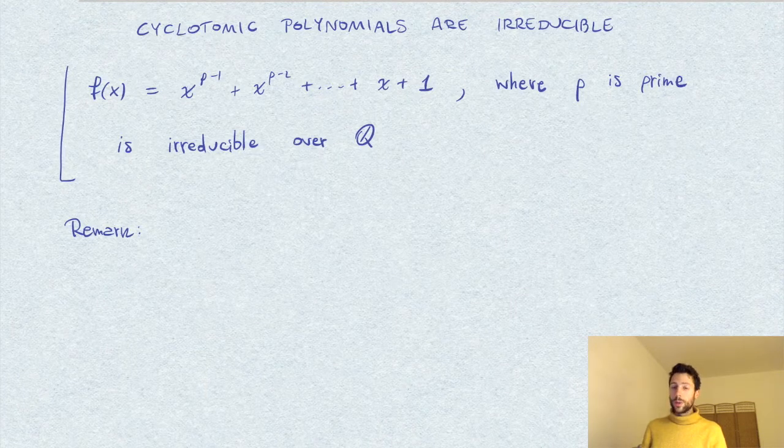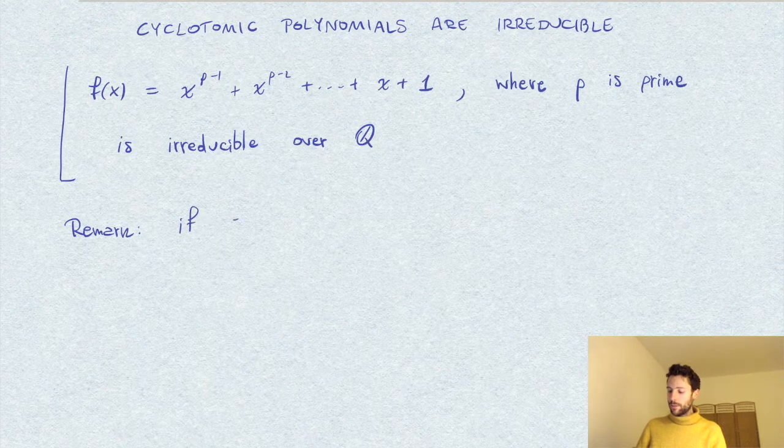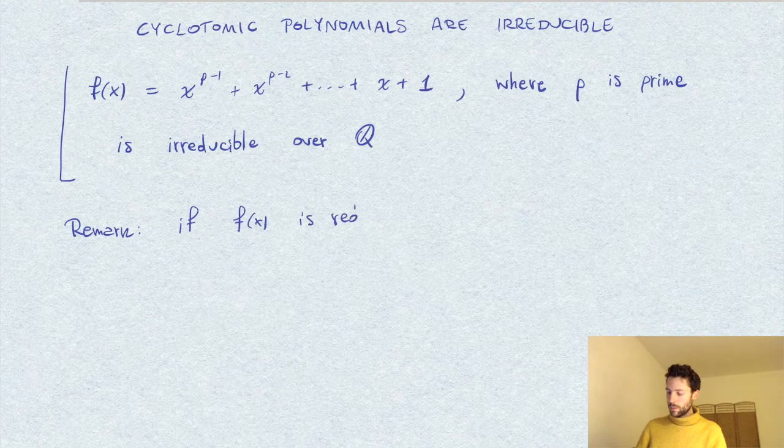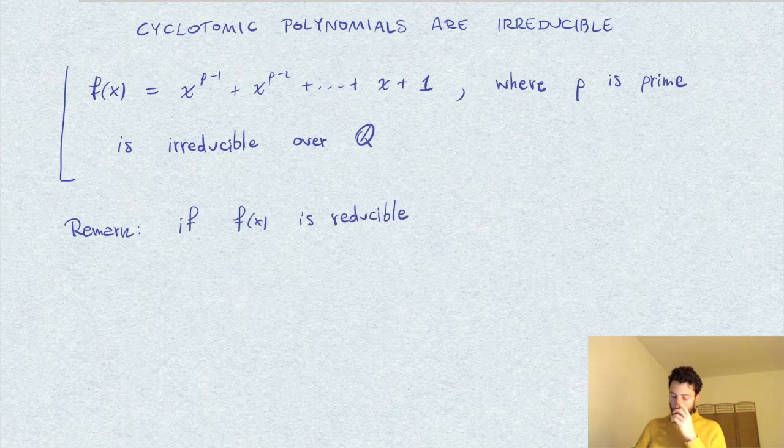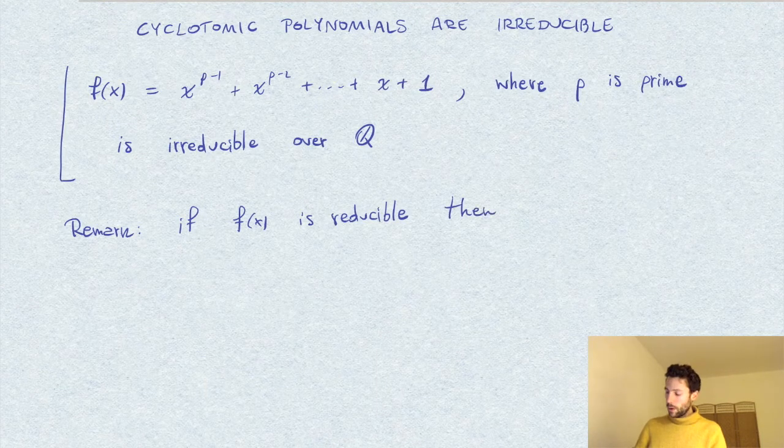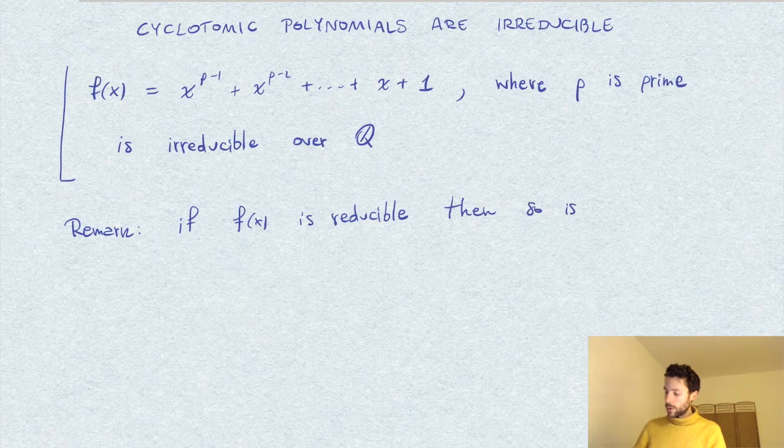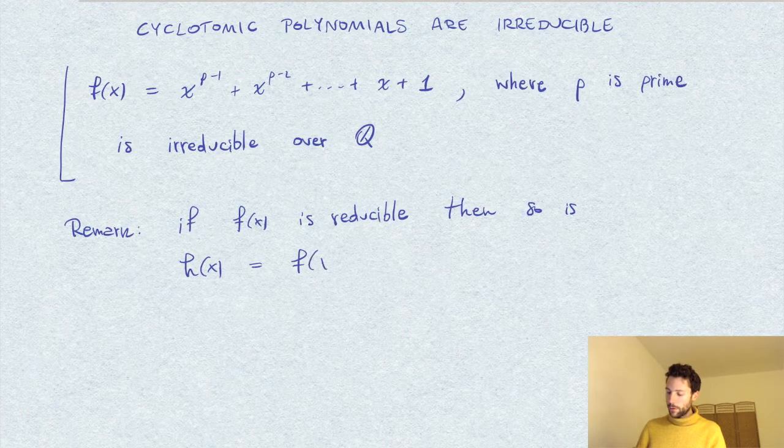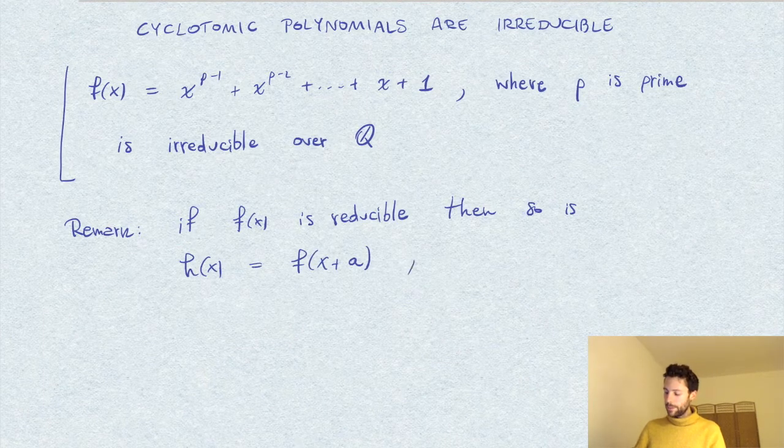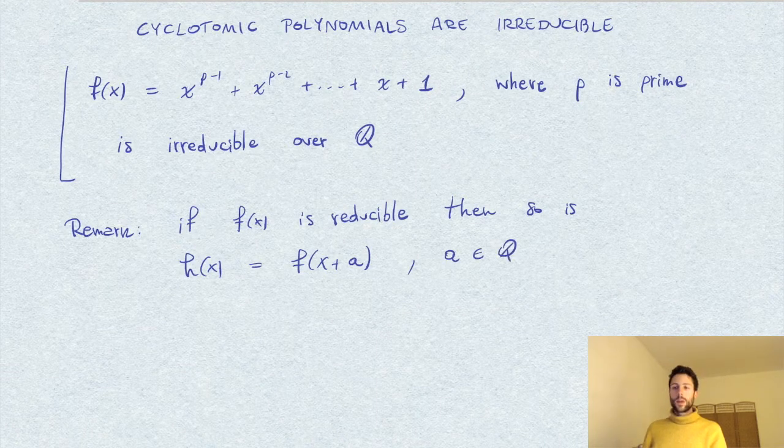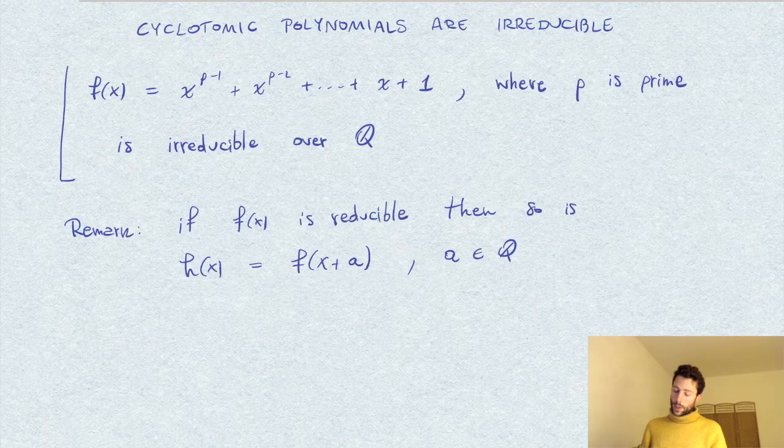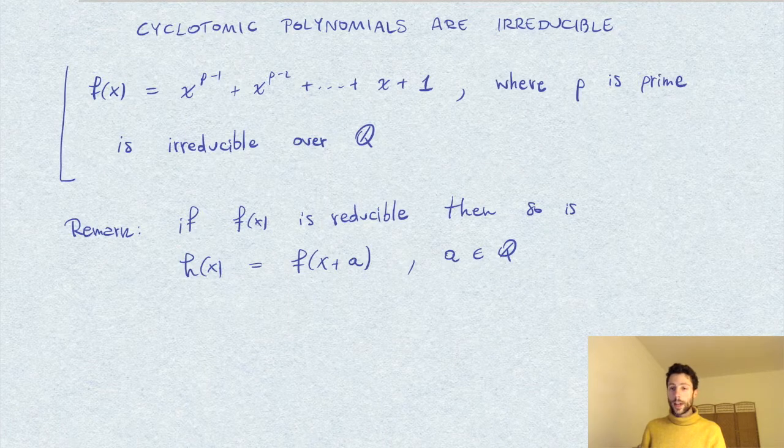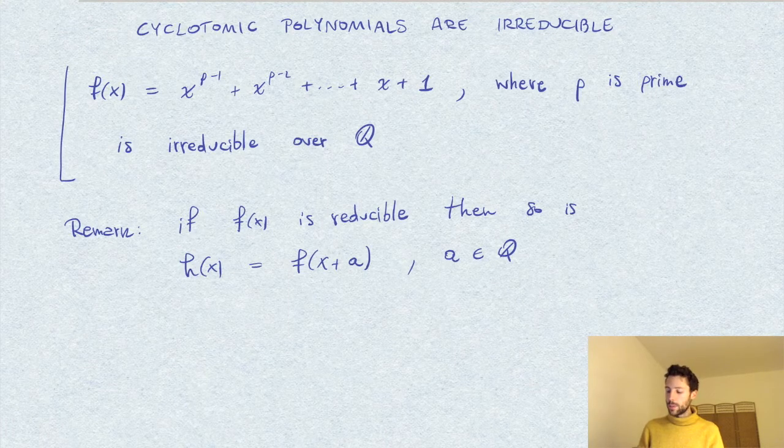So my remark is that if a polynomial f of x is reducible, then so is also the polynomial h of x, which I define to be f of x plus some constant a. Given this, we can apply this substitution or shift and check irreducibility for h, which would imply irreducibility for f.